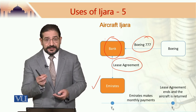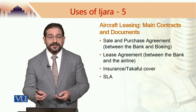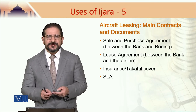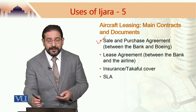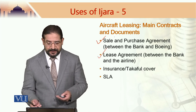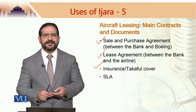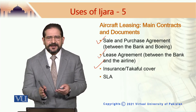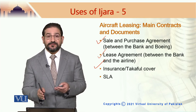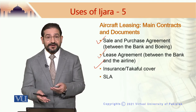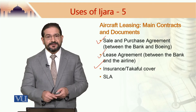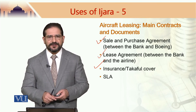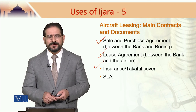Many EJARA-based financing transactions are taking place in the market. Given that this is a rather simple structure, the main contracts and documents are: a sale and purchase agreement between the bank and Boeing; a lease agreement between the bank and the airline; insurance and kafil cover; and a service level agreement. The service level agreement is important because, especially for aircraft, Dubai Islamic Bank would not get good deals for servicing. Airlines have strong contacts in that domain and get very suitable deals, whereas a bank would find it very difficult to enter into maintenance contracts with vendors.